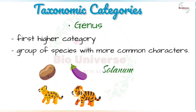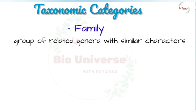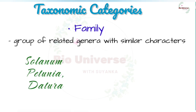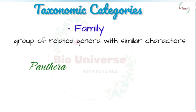Lion, leopard, and tiger, with several common features, are all species of the genus Panthera. Family has a group of related genera with still fewer similarities compared to genus and species. Families are characterized on the basis of both vegetative and reproductive features of plant species. Among plants, three different genera — Solanum, Petunia, and Datura — are placed in the family Solanaceae. Among animals, genus Panthera is put along with genus Felis in the family Felidae.